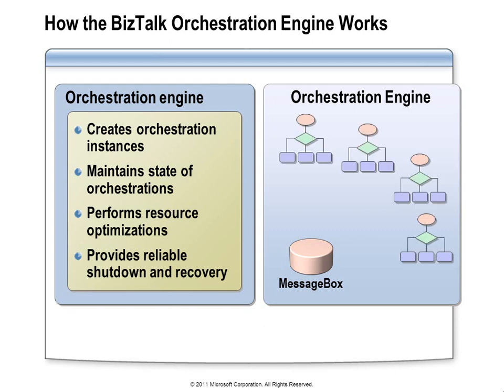The orchestration helps maintain a stable runtime environment, making the best possible use of available resources. When the system shuts down, it manages that shutdown in an orderly way so that no data is lost. In a catastrophic failure, if a server just goes down and your orchestration is configured to run on more than one server in your BizTalk group, the orchestration engine will create a new instance of your orchestration on another server and allow the orchestration to pick up where it left off.